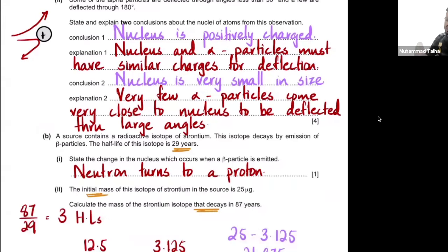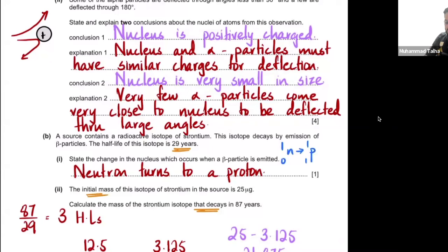Part B: the radioactive isotope of strontium decays by beta particle emission. The change in the nucleus is that a neutron turns into a proton. The nucleus emits an electron (beta particle) because of this internal change. The nuclear equation: a neutron (mass number 1, proton number 0) becomes a proton (mass number 1, proton number 1) plus a beta particle. Nucleon number and proton number are both conserved.